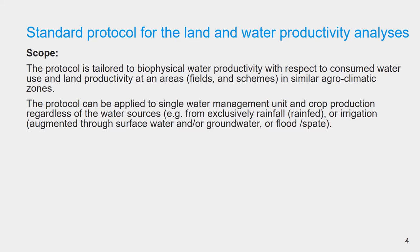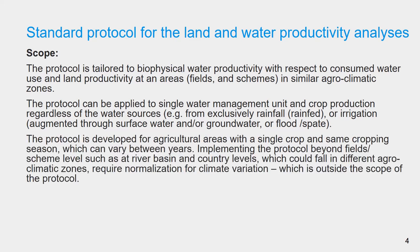It can also cover water sources and irrigation from flood or spate irrigation. The protocol is developed for agricultural areas with a single crop and same cropping season, which can vary between years. Implementing the protocol beyond field or scheme level — such as at river basin and country levels in different agro-climatic zones — requires normalization for climatic variation, which is outside the scope of this protocol.